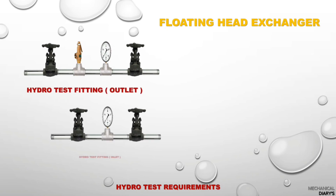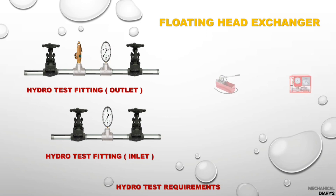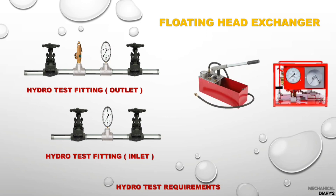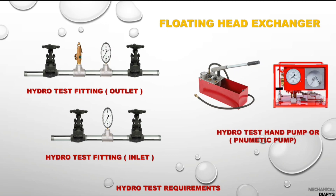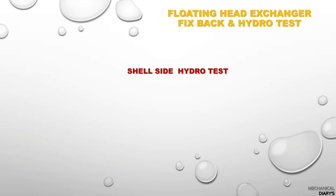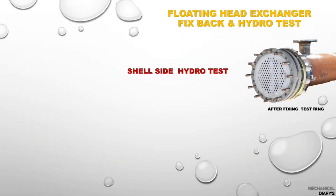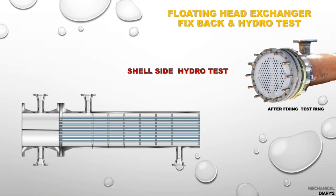There are two types of pumps: a hand pump for low volume and a pneumatic pump for large volume. Once you have clearance from inspection and all inspection activities are completed, you can proceed directly to the shell side hydrotest.